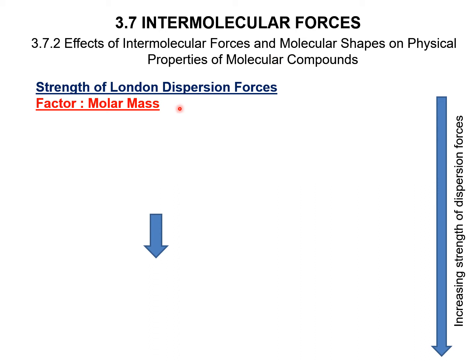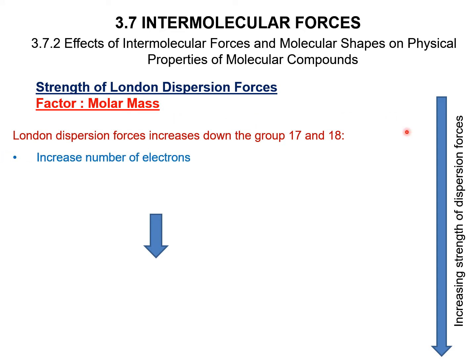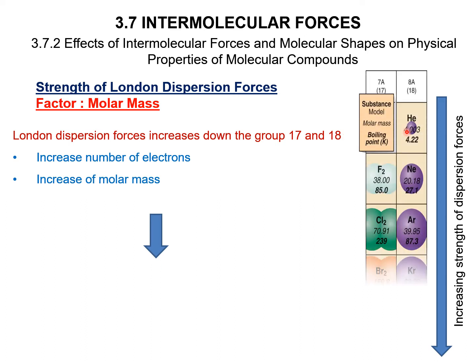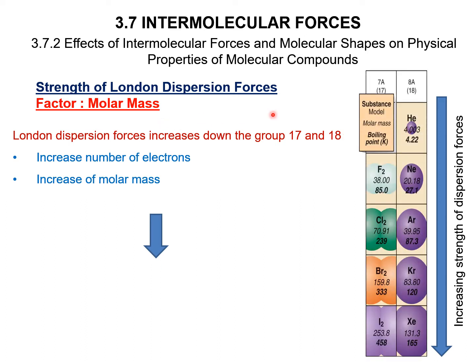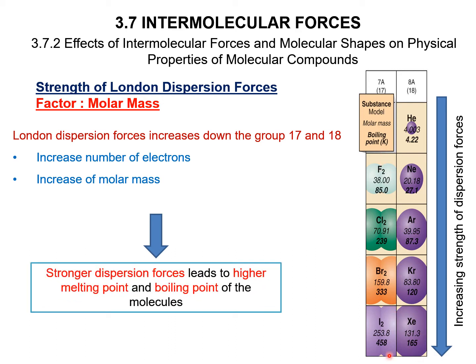The strength of London dispersion forces — the first factor is molar mass. London dispersion forces increase down groups 17 and 18 because as you go down the group, the number of electrons increases and molar mass increases as well. So, stronger dispersion forces lead to higher melting points and boiling points.